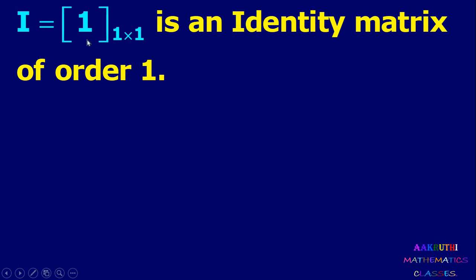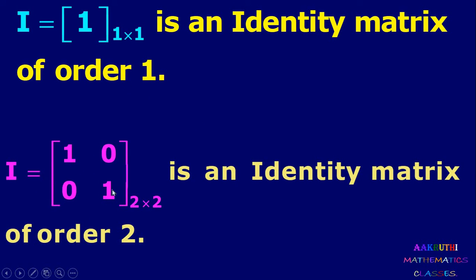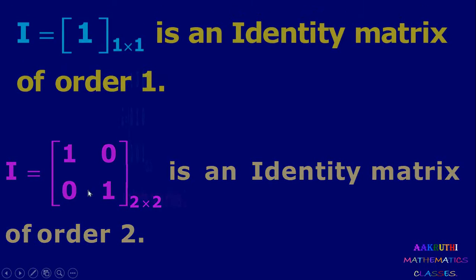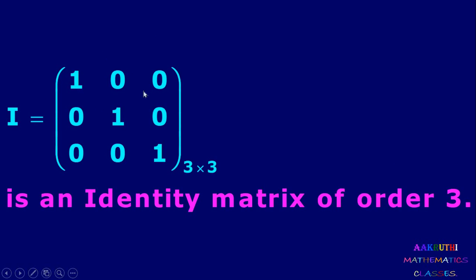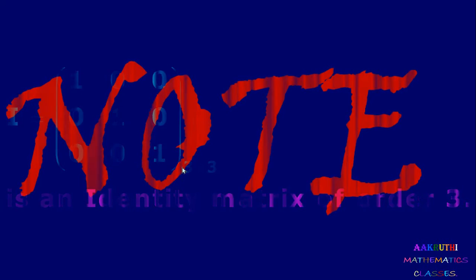Examples: I equal to [1] is the identity matrix of order 1. I equal to [1, 0; 0, 1] is the identity matrix of order 2 — two rows and two columns, diagonal elements are 1, other elements are 0. The identity matrix of order 3 is [1, 0, 0; 0, 1, 0; 0, 0, 1].